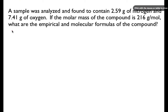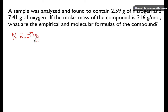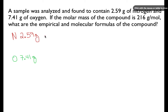The first thing you want to do is write down the elements that are present and the mass of each of those elements. Nitrogen is 2.59 grams and oxygen is 7.41 grams. Now, a chemical formula tells us the ratio of the number of atoms of each element, not the mass. So we have to convert our grams to moles.